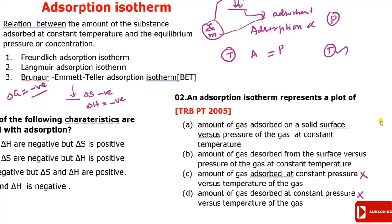So the adsorption isotherm is defined as the amount of gas adsorbed on a solid surface versus pressure of the gas at constant temperature. There are three types: Freundlich adsorption isotherm, Langmuir adsorption isotherm, and BET (Brunauer–Emmett–Teller) isotherm. In this presentation, Freundlich adsorption isotherm will be discussed in detail.